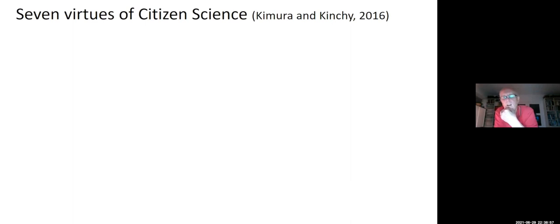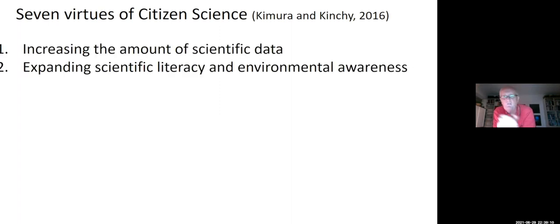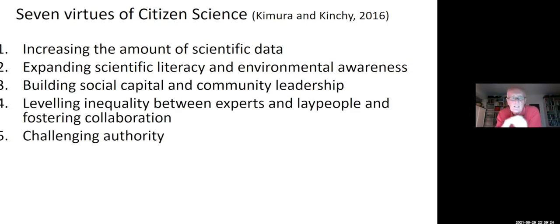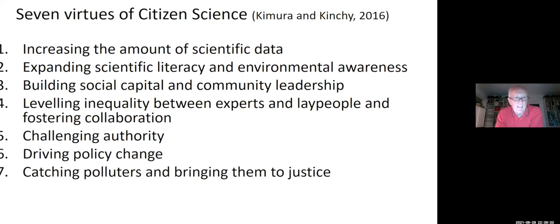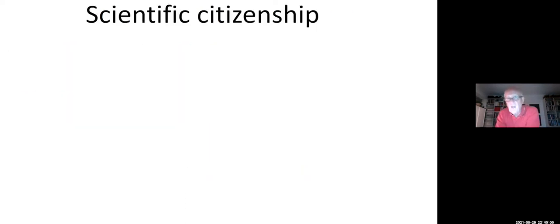Some colleagues, Kimura and Kinshi have put together what they call the seven virtues of citizen science, it's obviously always open to discussion when people come up with those kind of categorizations. And if you take the first two, obviously there's seven. This fits very much increasing the amount of scientific data, expanding scientific literacy and environmental awareness, but they go on. Social capital, community leadership, inequality featured one or two times already in this conversation, leveling inequality, challenging authority, driving policy change, catching polluters and bringing them to justice. So the point is that citizen science is interesting to me as a social scientist, precisely because it contains these different elements.